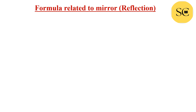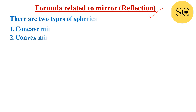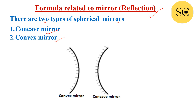First, formulas related to mirrors — spherical mirrors — meaning reflection phenomena. There are two types of spherical mirrors: concave mirror and convex mirror. We will discuss the formulas related to these spherical mirrors.